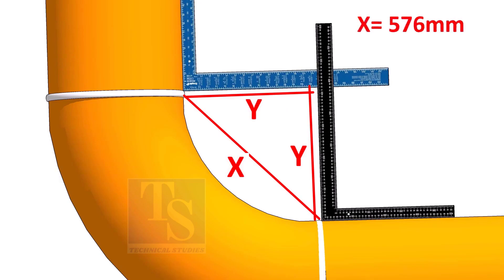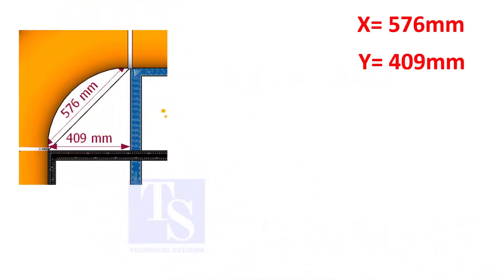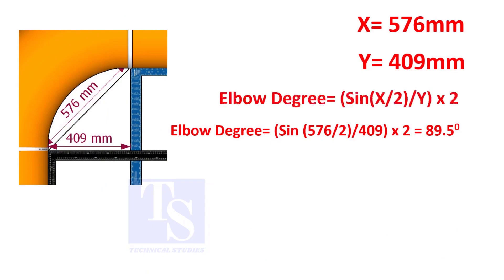Assume that the value of x is 576 and the value of y is 409 millimeters. Apply the formula. The answer is 89.5 degrees.